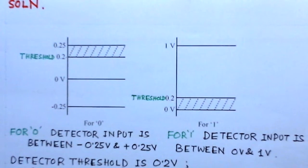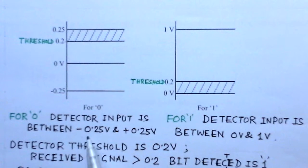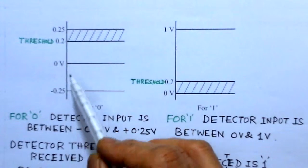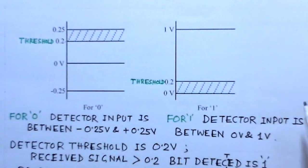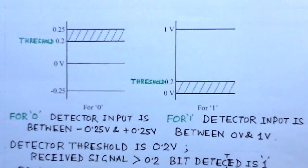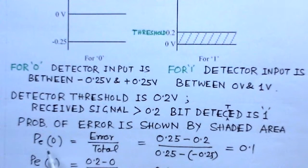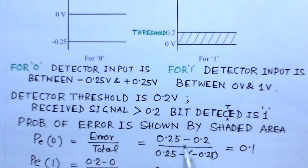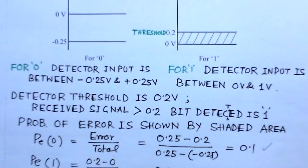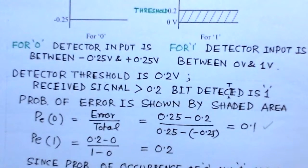For 0, detector input is between minus 0.25 and 0.25, and for detection of 1, detector input is between 0 and 1 volt. The detector threshold is 0.2 volts — if received signal is greater than 0.2 volts, the bit detected is 1. The probability of error is shown by the shaded area. The probability of error for detection of 0 is the error region divided by the total range, which is 0.25 minus minus 0.25, giving the full range.